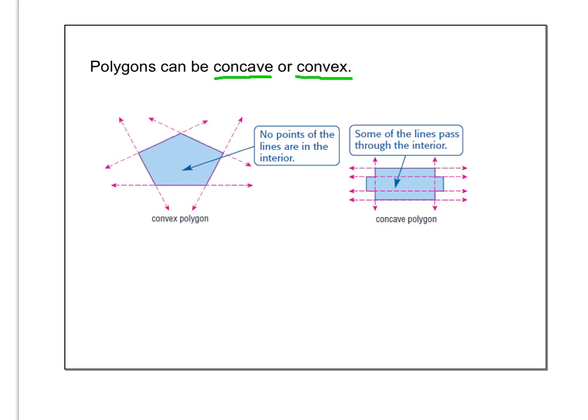But what's really important to understand is when you have a convex polygon, no points of the lines are in the interior. So see how if I extend any of these segments they don't go through the inside of the shape. Whereas over here a concave polygon, some of the lines do pass through the inside.